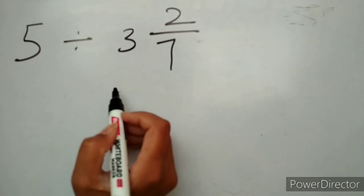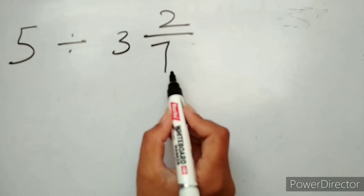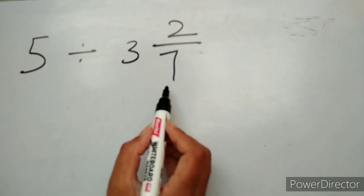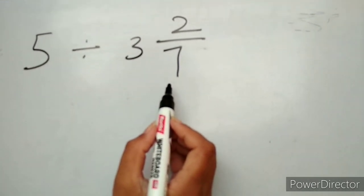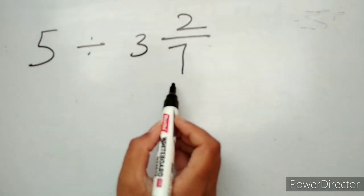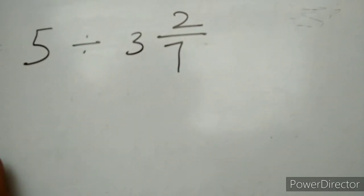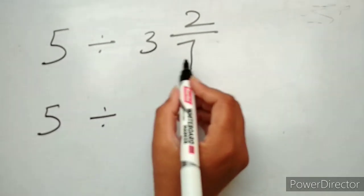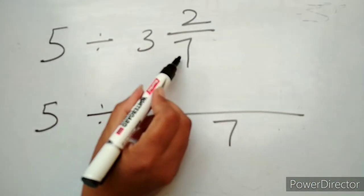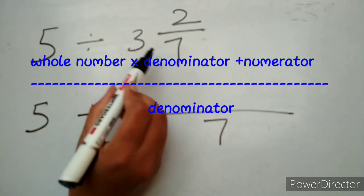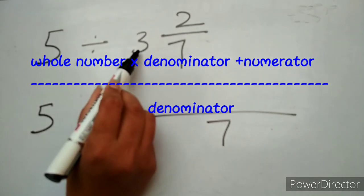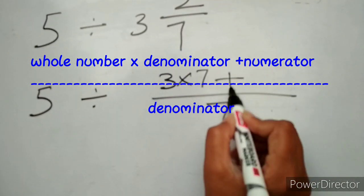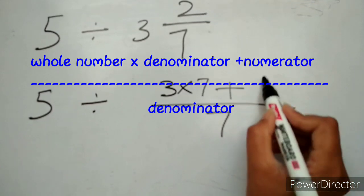A mixed fraction is a combination of a whole number and a fraction. Here the whole number is 3 and the fraction is 2 upon 7. First we simplify the mixed fraction. To do this, write the denominator of the mixed fraction, which is 7, then multiply the whole number by the denominator: 3 multiplied by 7, then add the numerator, which is 2.